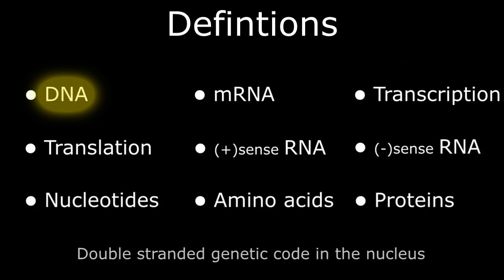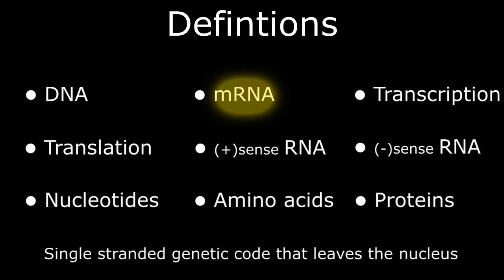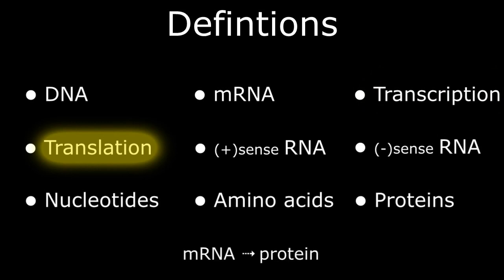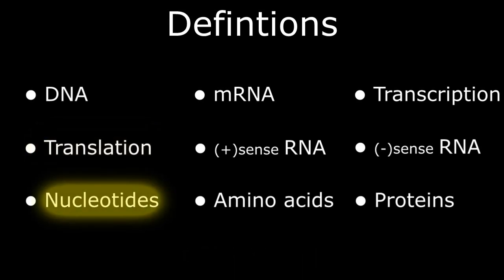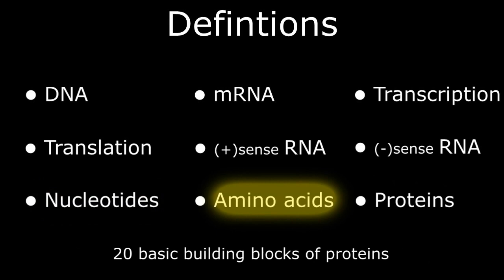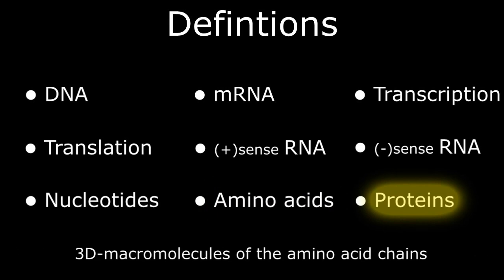In summary: DNA is the double-stranded genetic code that resides within the nucleus of all our cells. mRNA is the single strand of genetic code produced by RNA polymerase from DNA that leaves the nucleus and enters the cytoplasm. Transcription is the process of producing mRNA from the DNA template, and translation is the process of producing proteins from messenger RNA in the cytoplasmic ribosomes. Nucleotides are the basic components of DNA and messenger RNA, labeled C, G, T, A, and U. The 20 amino acids are the basic building blocks of proteins organized into a polypeptide chain, with three nucleotides encoding for one amino acid. Proteins are the three-dimensional folding of the amino acid polypeptide chain into functional structural and enzymatic organic molecules.